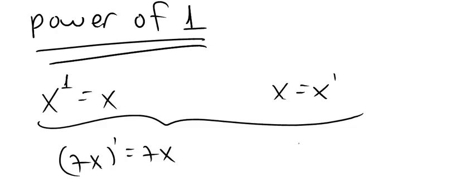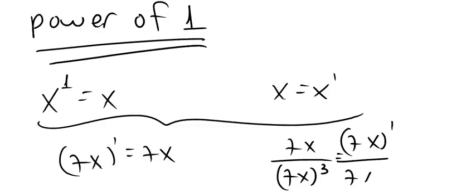Or when you want to reduce, you got 7x over 7x to the power of 3. You have to remember that this is the same as saying 7x to the 1 over 7x to the 3, and that way you can reduce it.